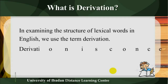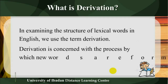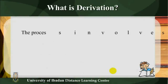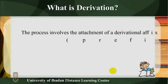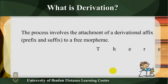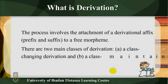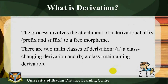Content — What is derivation? In examining the structure of lexical words in English we use the term derivation. Derivation is concerned with the process by which new words are formed from other words. The process involves the attachment of a derivational affix — prefix and suffix — to a free morpheme. There are two main classes of derivation: A) class-changing derivation, and B) class-maintaining derivation.